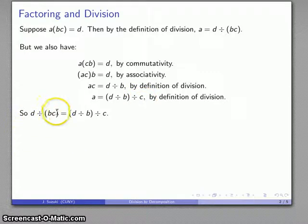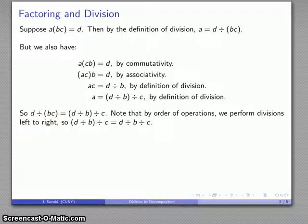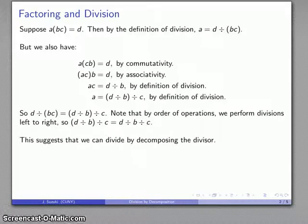So I can do this division by doing this pair of divisions. Importantly, because our convention by the order of operations is that we perform divisions from left to right, I don't actually need to indicate this pair of parentheses. I can just write it as D divided by B divided by C. My order of operations says I'm going to do that divide by B first, then the divide by C. So what we can do is divide by decomposing the divisor.